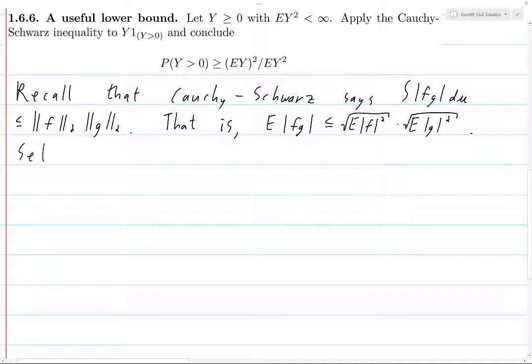So we simply set f to be our random variable Y and g to be the indicator function where Y is greater than 0. This is going to be the expected value of Y times this indicator function, Y greater than 0.